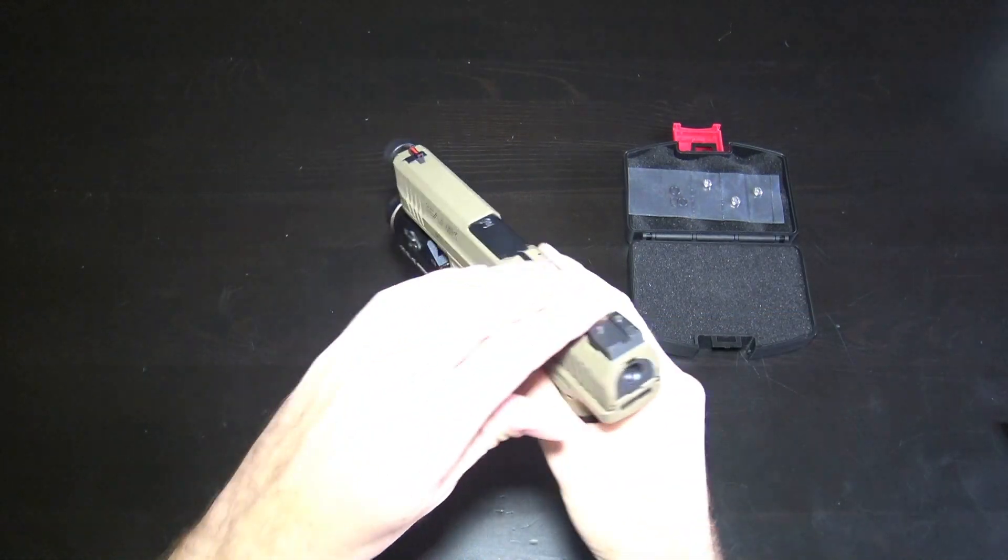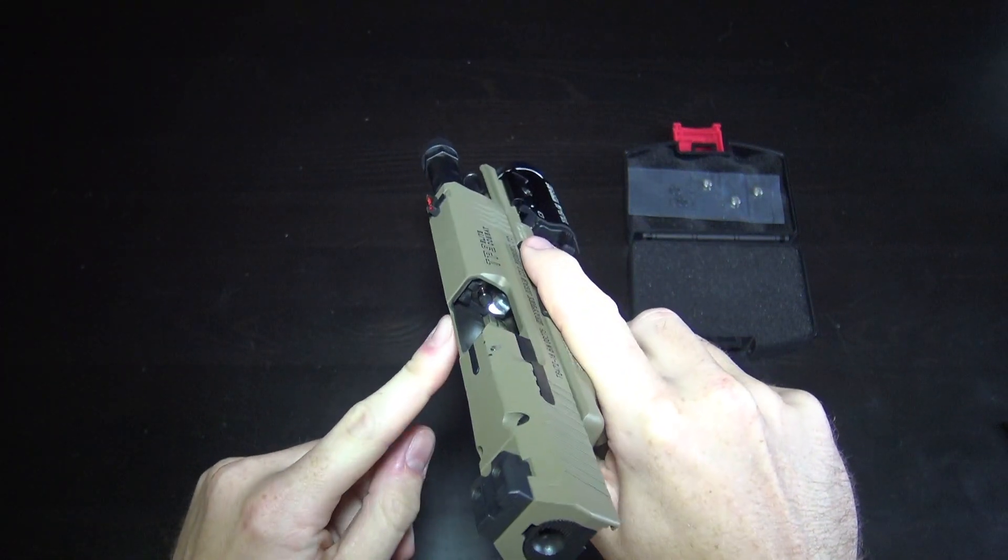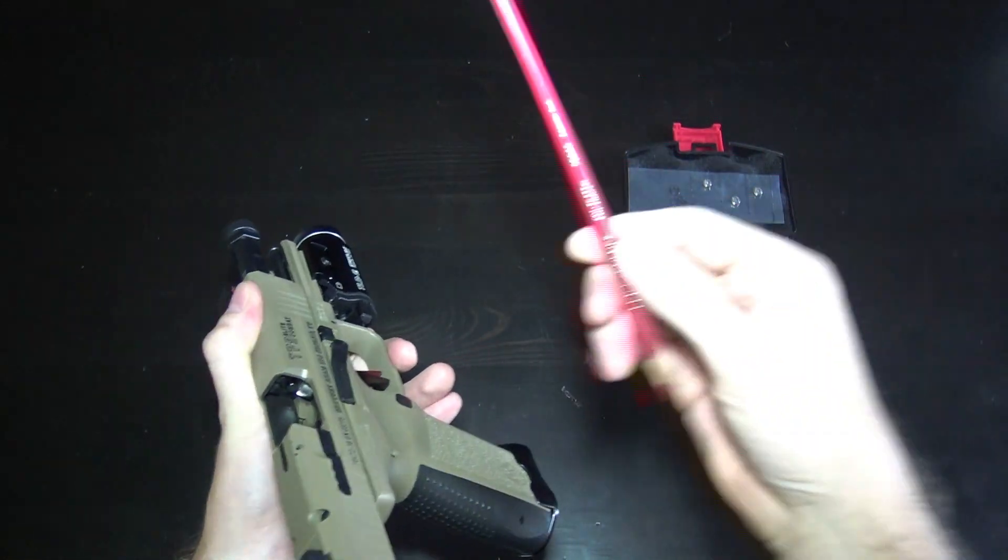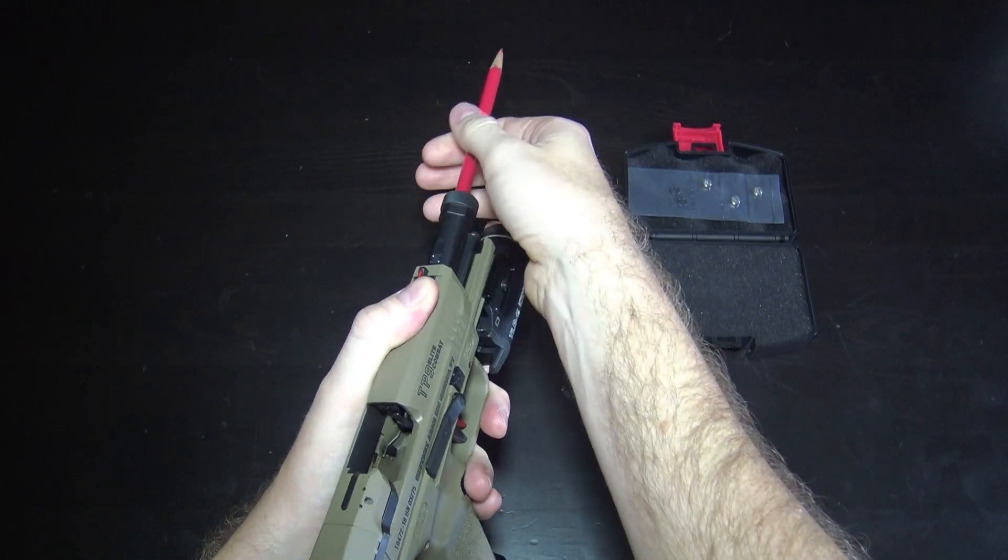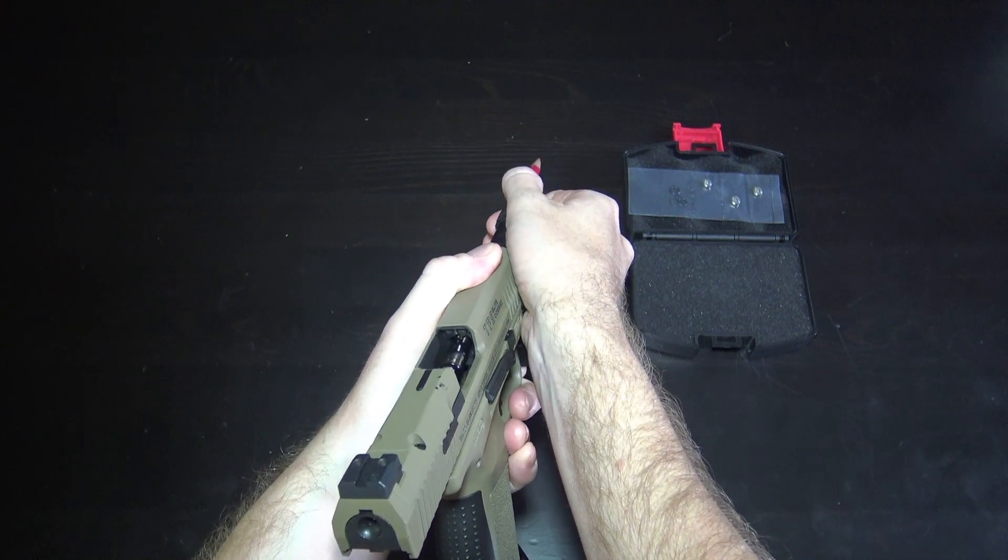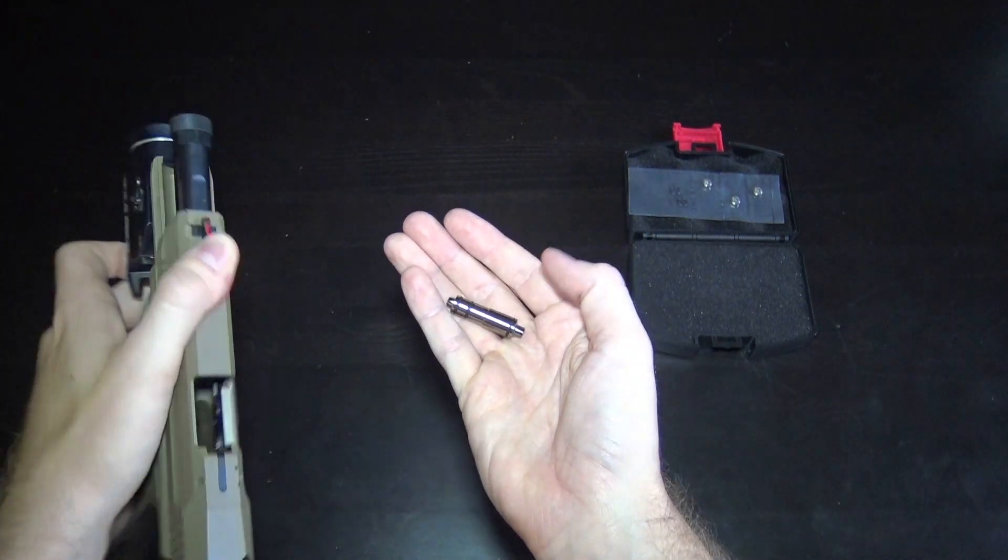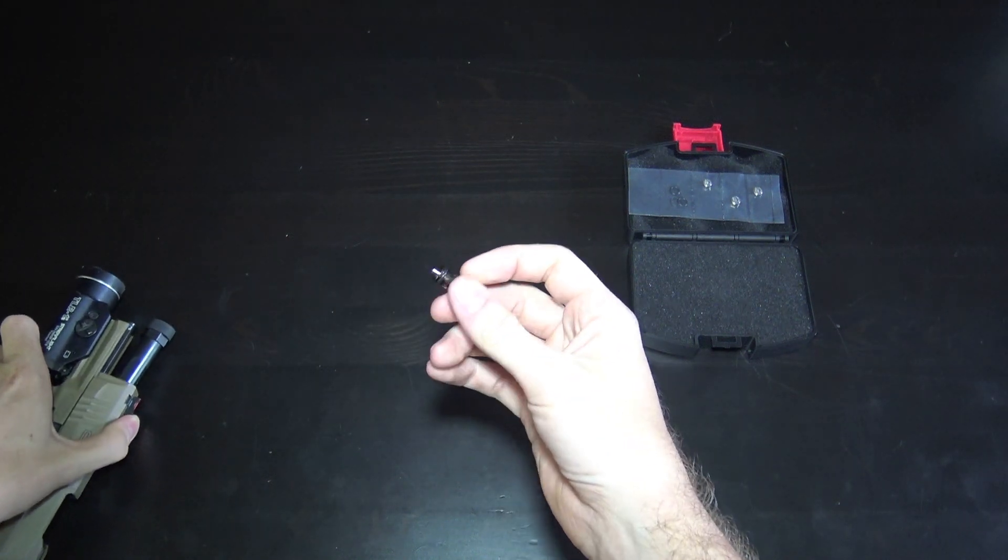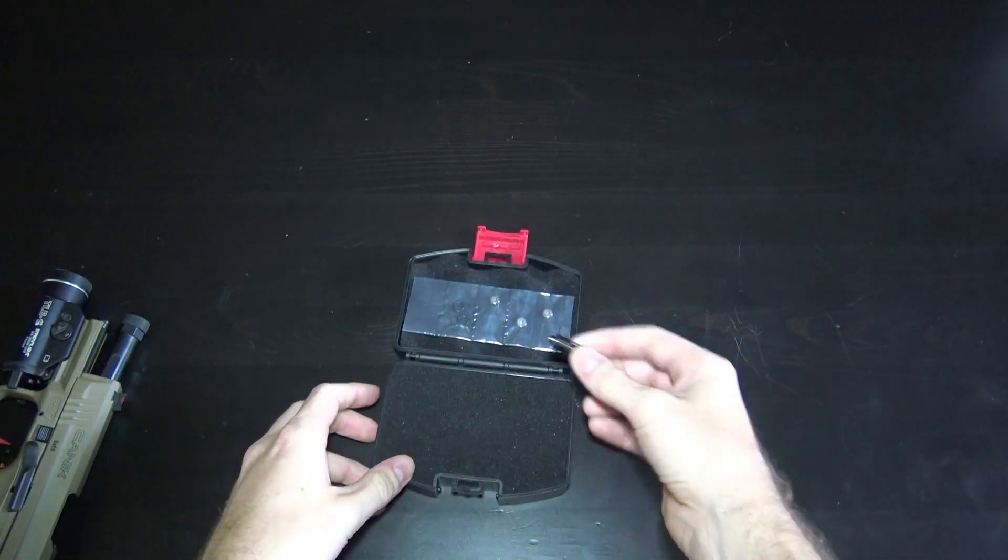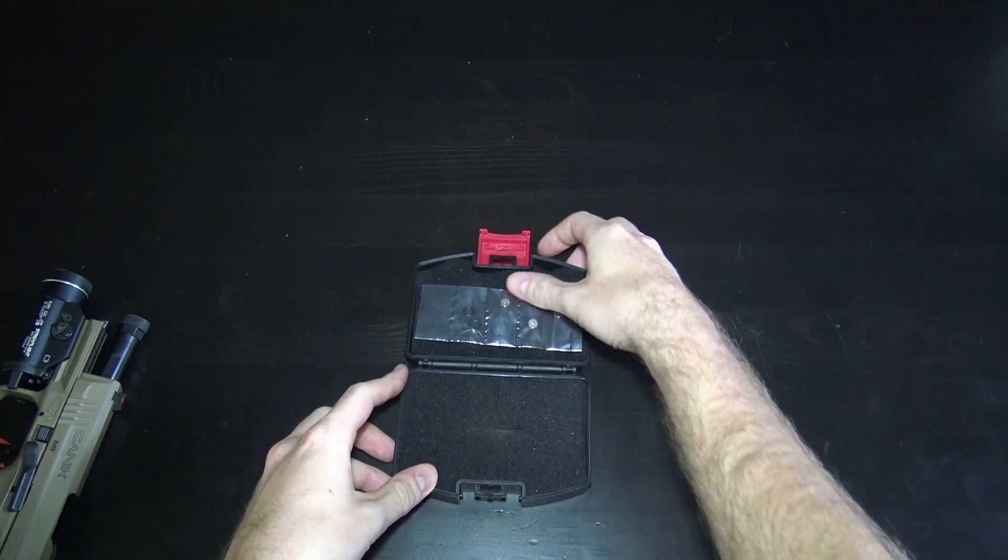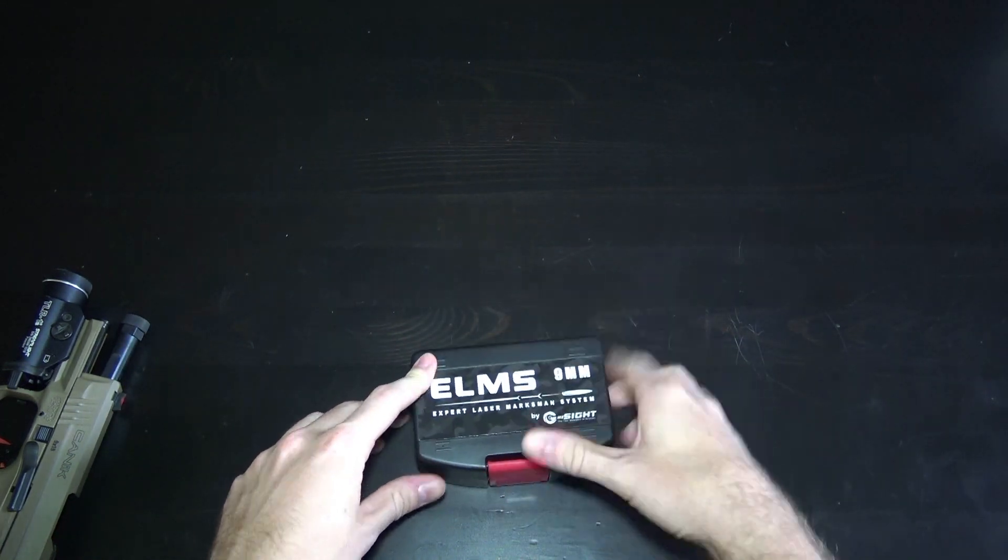Once you're done, grab your weapon. You can see the laser is still in there. Find something that can fit down the barrel and pop it out, freeing up those O-rings. You might want to clean it to get any grease or oils off, then pop it back in the container, and you're ready to go.